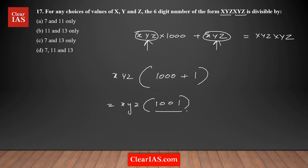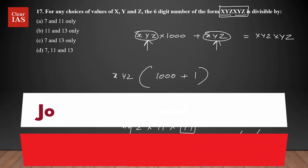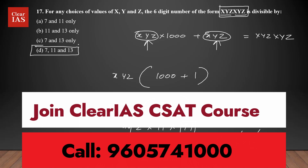Now factorize 1001: it equals 11 × 91, and 91 = 7 × 13. So xyzxyz = xyz × 11 × 7 × 13. This means the number is divisible by 7, 11, and 13 — it is a multiple of all three. Therefore, the answer is option D.